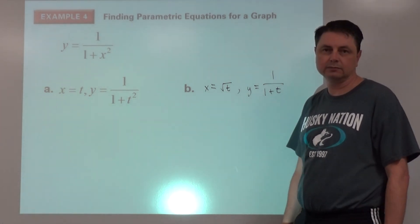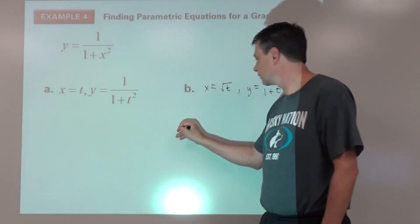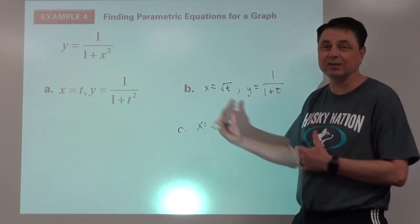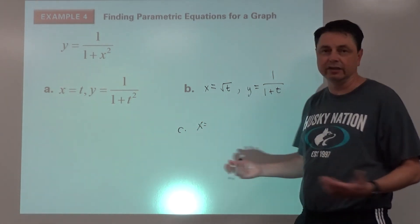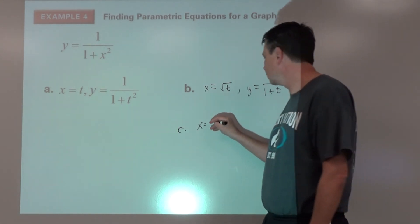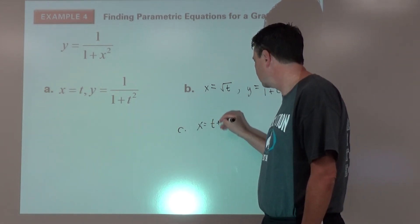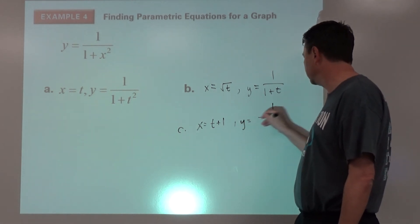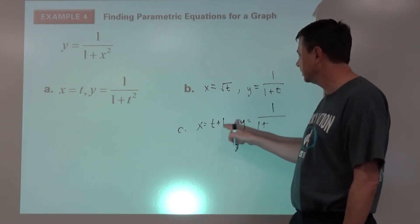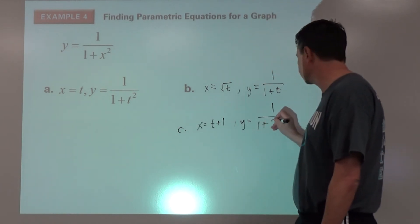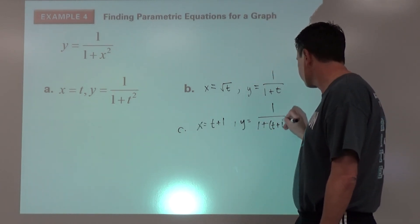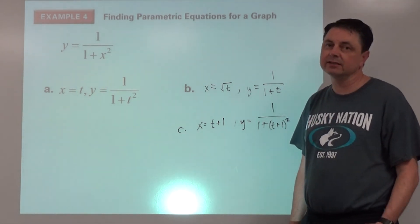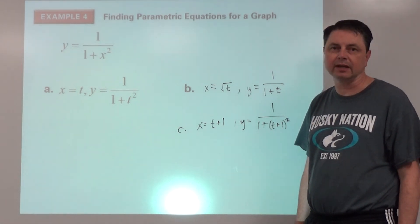Another option: let x equal t squared, giving y equals 1 over 1 plus t to the fourth. Or let x equal t plus 1, then y equals 1 over 1 plus (t+1) squared. There are many valid parameterizations. That's it for today — see you next time.